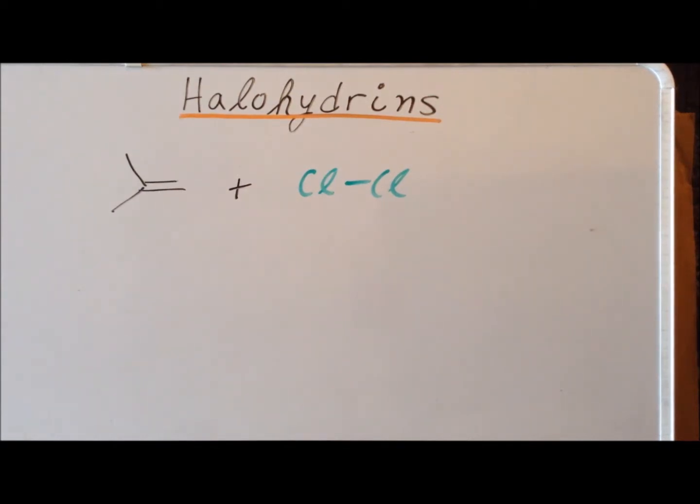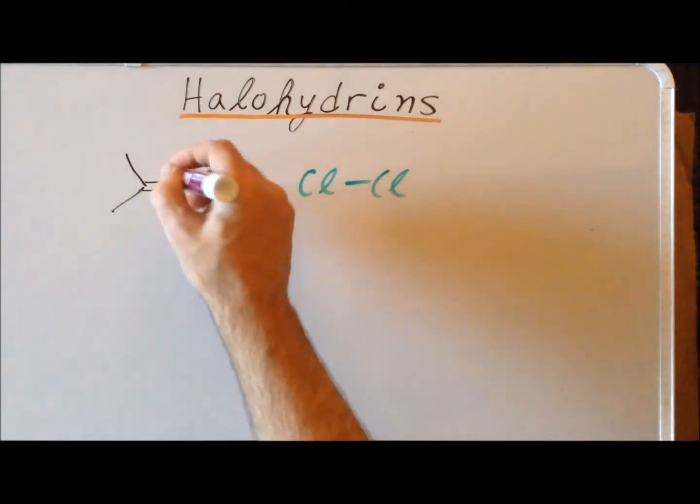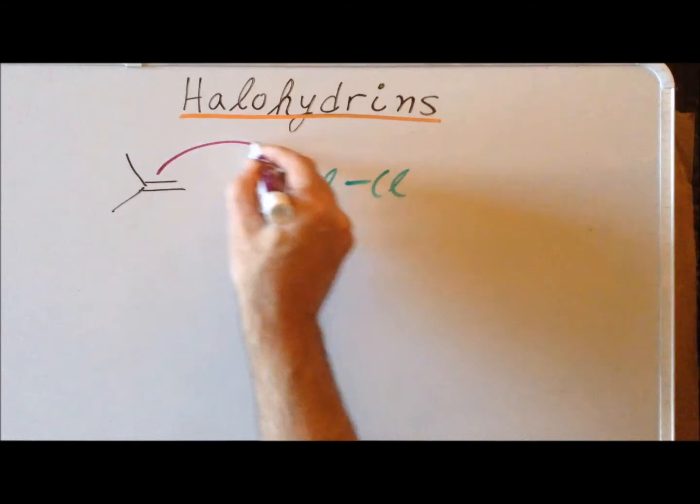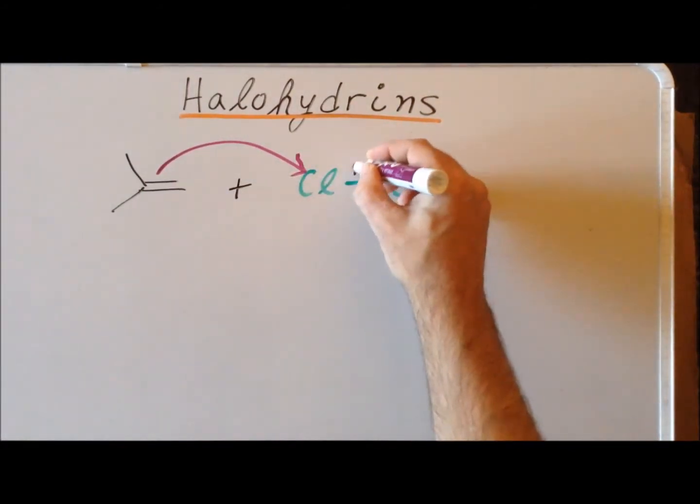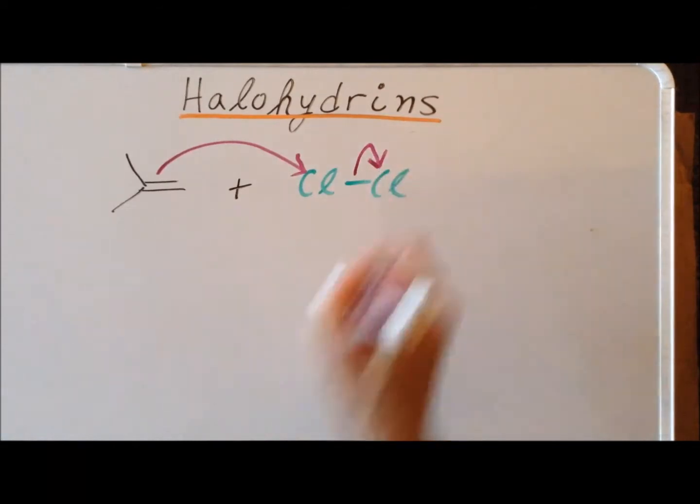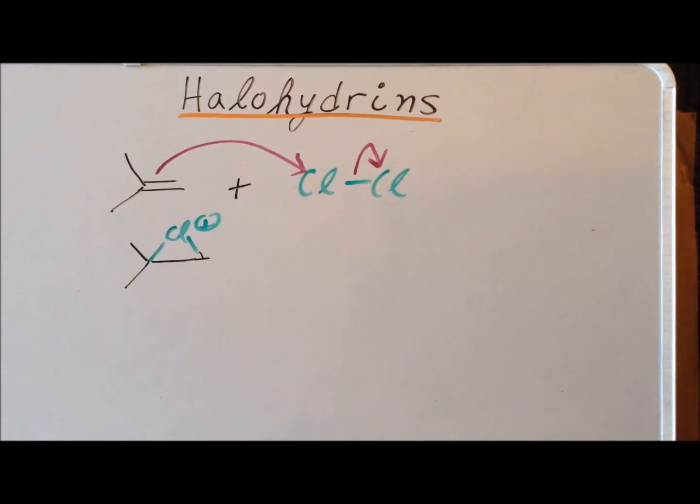For our final case, let's look at a reaction with isobutylene, 2-methylpropene. As we know already, we're going to have attack of the electron-rich carbon-carbon double bond on one of the halogens. And then we're going to have heterolytic cleavage of the chlorine-chlorine bond. The first stage is the addition to the carbon-carbon double bond to form this three-membered chloronium ion.